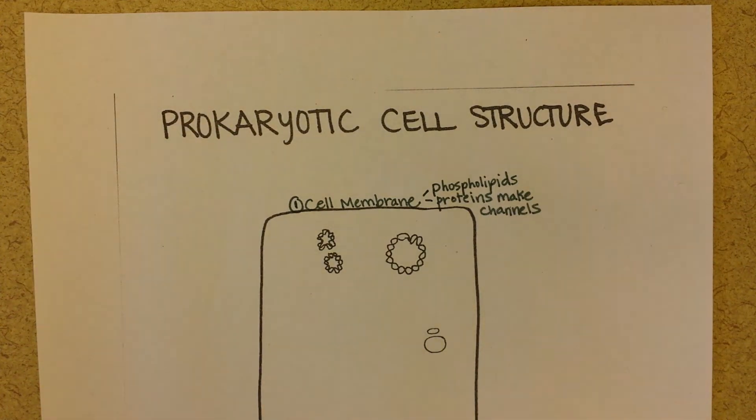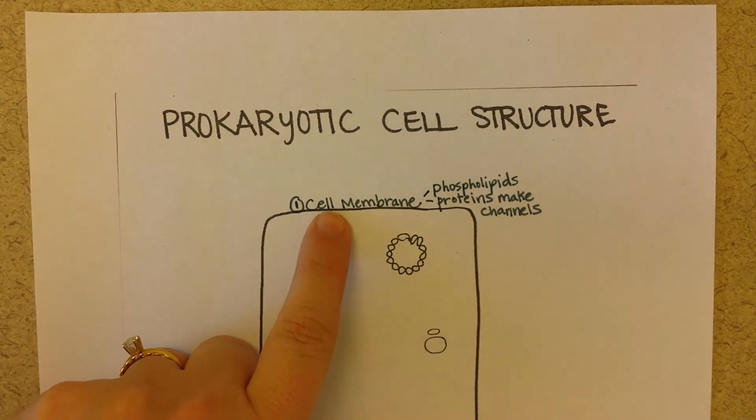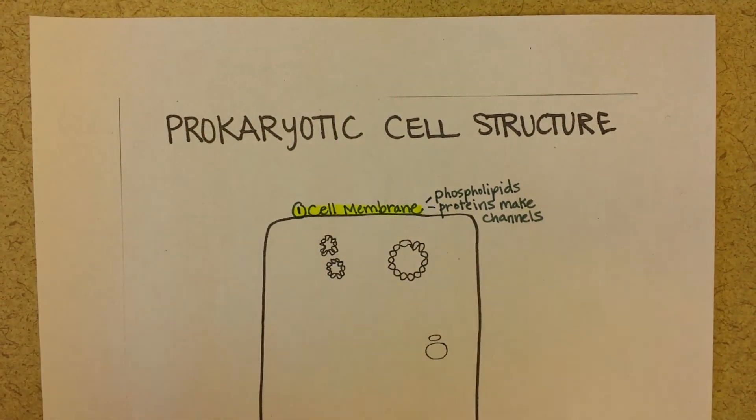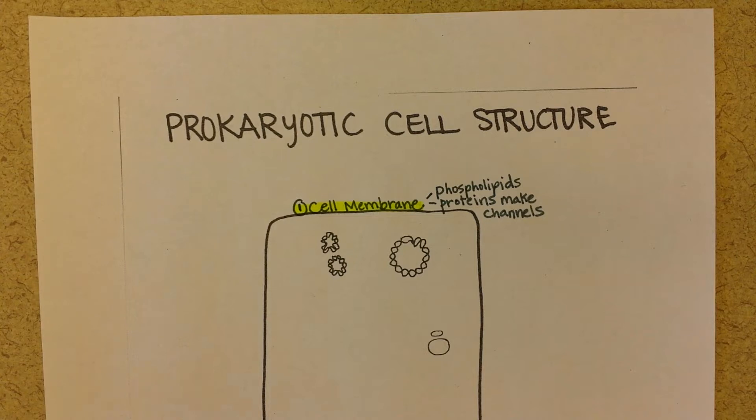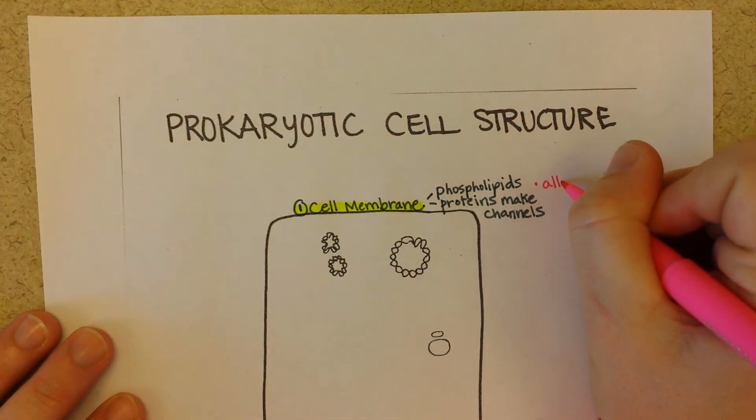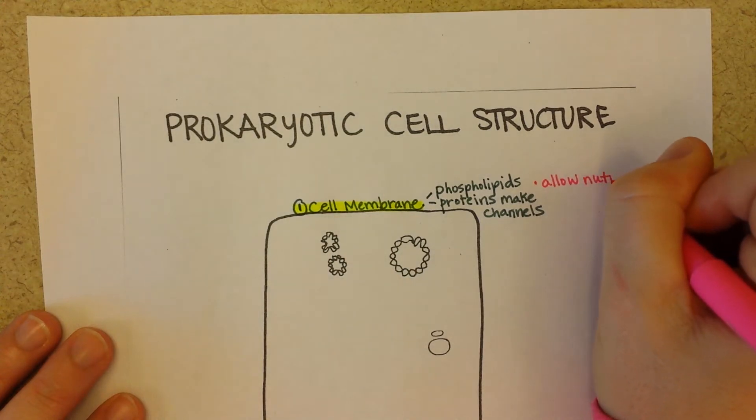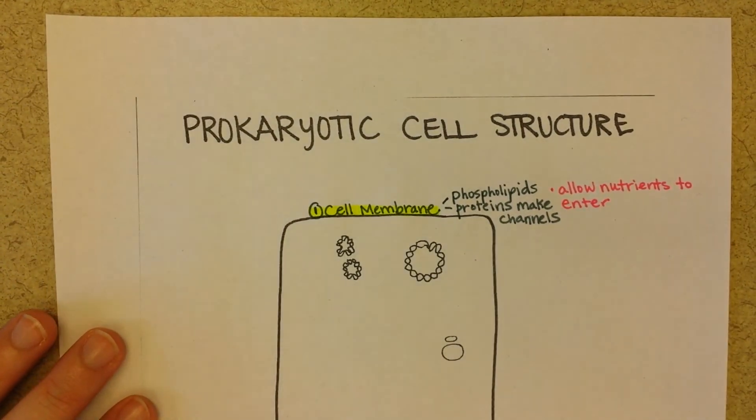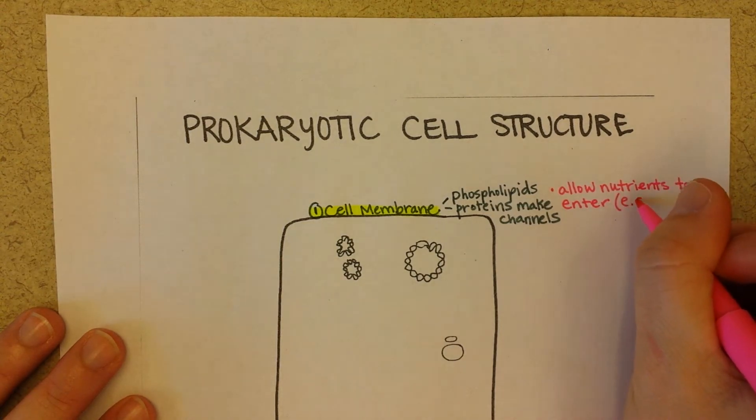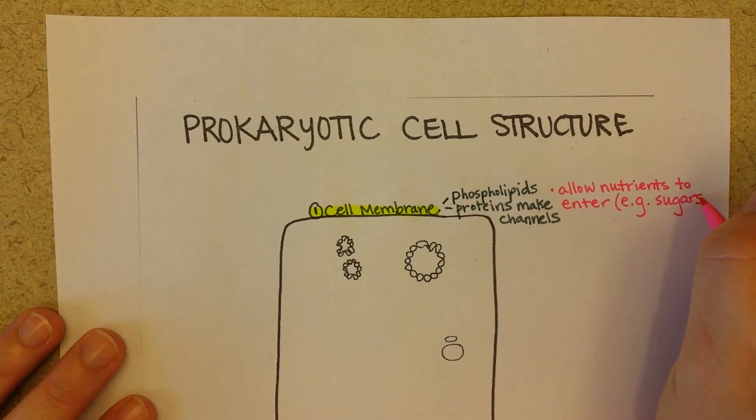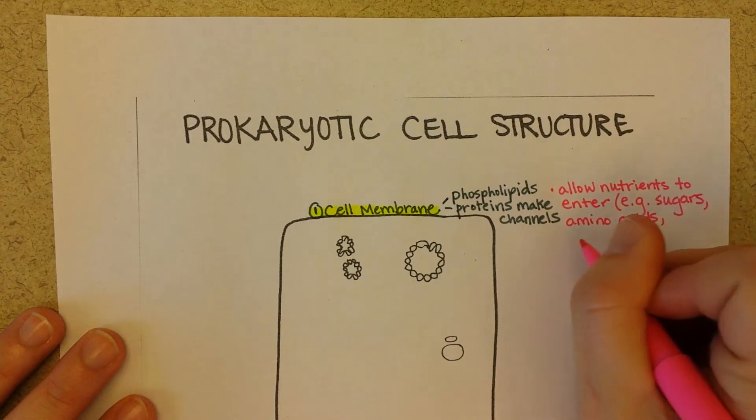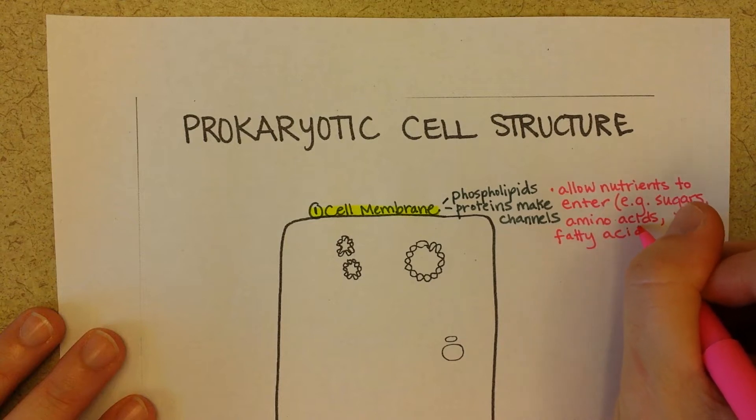And then we'll use pink to say what the function is of a structure. So this is the cell membrane. We'll highlight it in yellow. So that's structure number one. And then with pink we'll talk about what it does. So basically the cell membrane is really important for allowing nutrients to enter. So examples of this, what is a nutrient? Well sugars, amino acids, fatty acids.